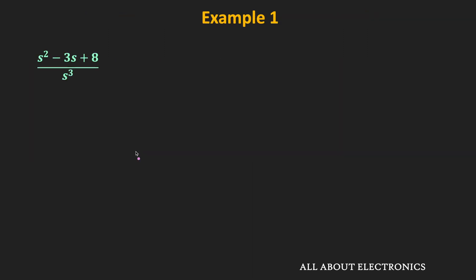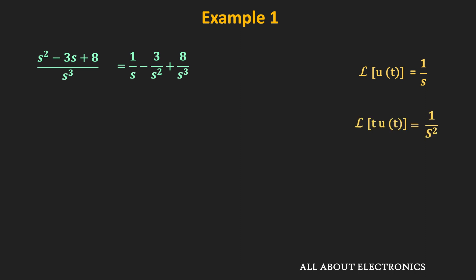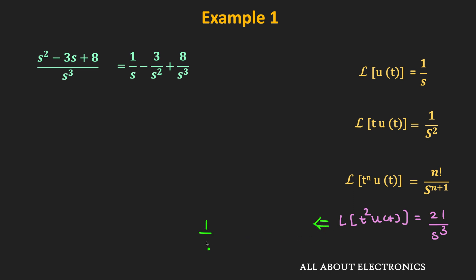Here the function X(s) equals (s² − 3s + 8) / s³. If we divide the numerator by s³ we can write it as 1/s − 3/s² + 8/s³. From the Laplace transform table we know the Laplace transform of the unit step function is 1/s, of the ramp function t·u(t) is 1/s², and in general the Laplace transform of tⁿ·u(t) is n! / s^(n+1). So for n = 2, the Laplace transform of t²·u(t) is 2!/s³, meaning the inverse Laplace transform of 1/s³ is t²/2 · u(t).